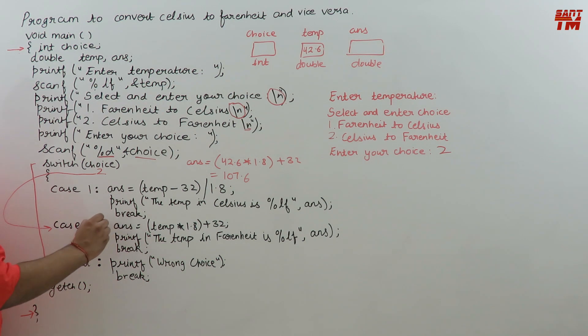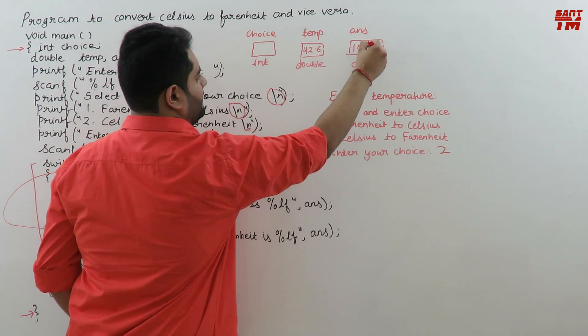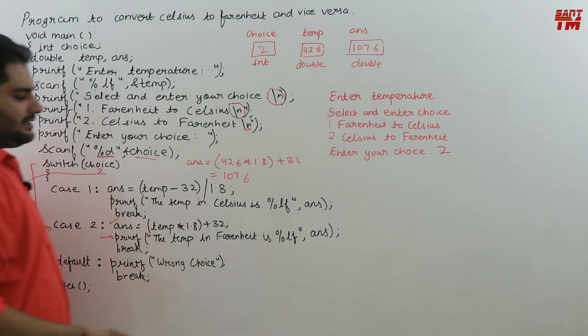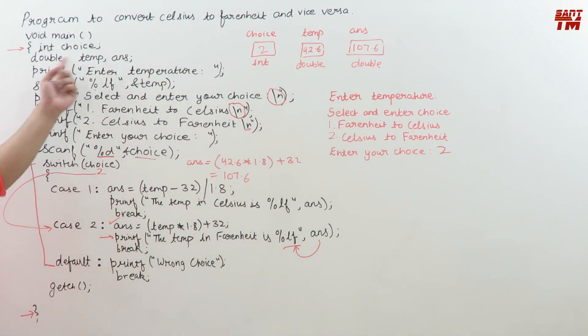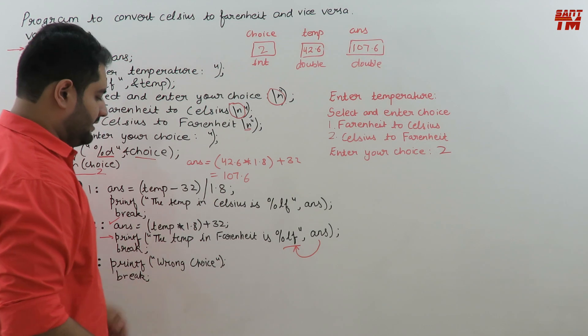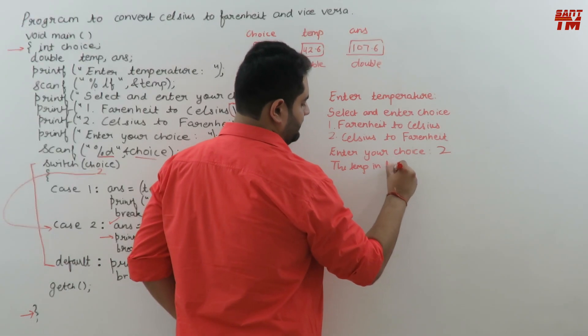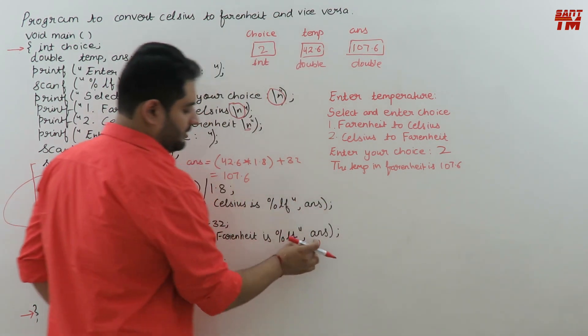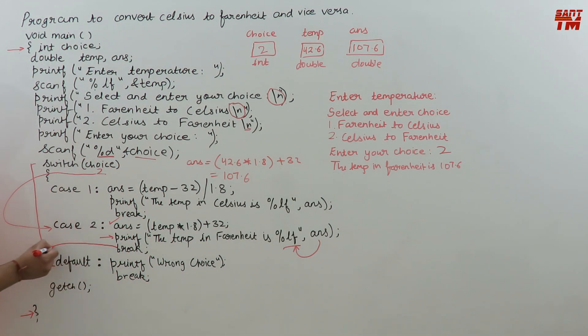This statement is executed and ans has got the value 107.6. The choice is 2. The next statement in the case is printf the temp in Fahrenheit is %lf. This %lf will get value from answer - answer is also double type so we use %lf. The temp in Fahrenheit is 107.6. Then this break statement will take us out of the switch case.